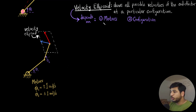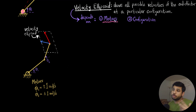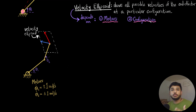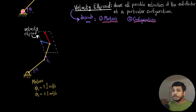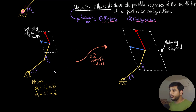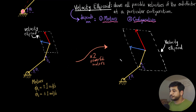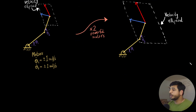The velocity ellipsoid depends on two factors. First, it depends on the motors — the more powerful they are, the higher the possible angular velocities, and the bigger the velocity ellipsoid. Second, it depends on your configuration, which is the current position of the robot — the current values of θ₁ and θ₂. If I use twice as powerful motors, the a and b vectors double in length and the velocity ellipsoid becomes roughly twice as big.